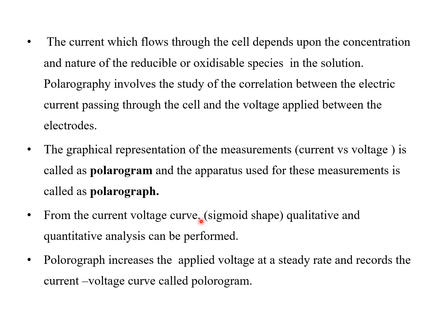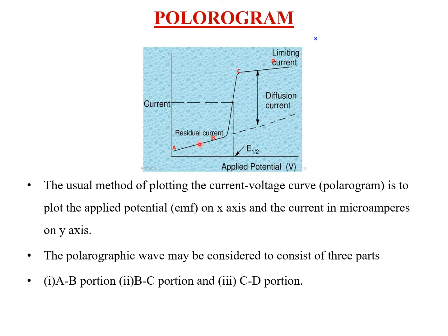From the current-voltage curve — which is usually sigmoid in shape — qualitative and quantitative analysis can be performed. The polarograph increases the applied voltage at a steady rate and records the current-voltage curve called the polarogram. The AB portion is the residual current, the BC portion is the diffusion current, and the CD portion is the limiting current.